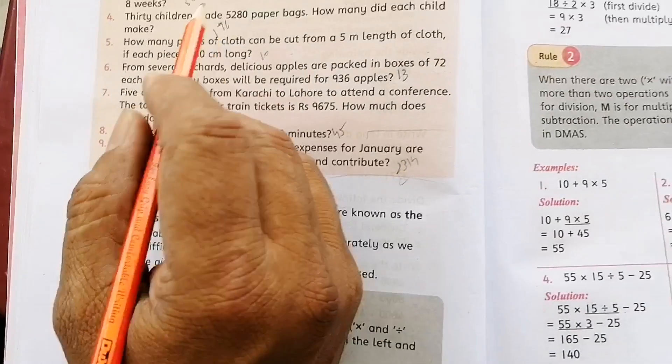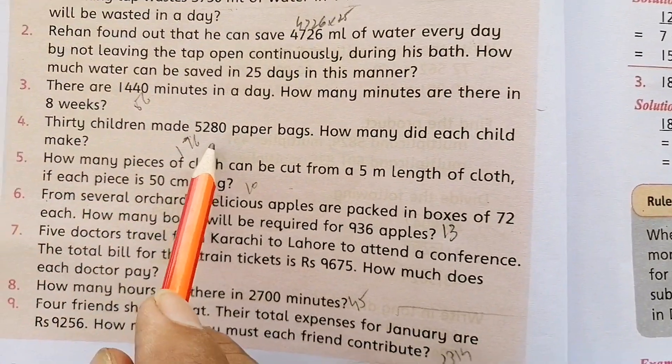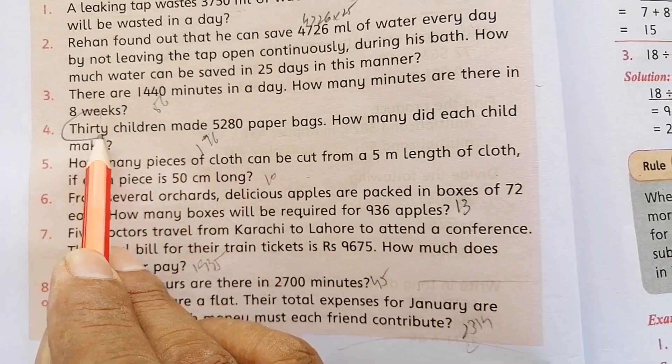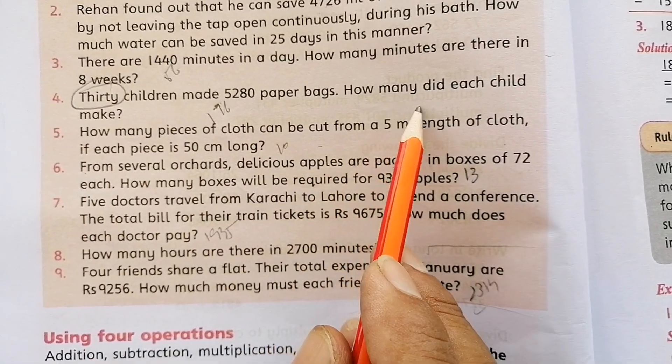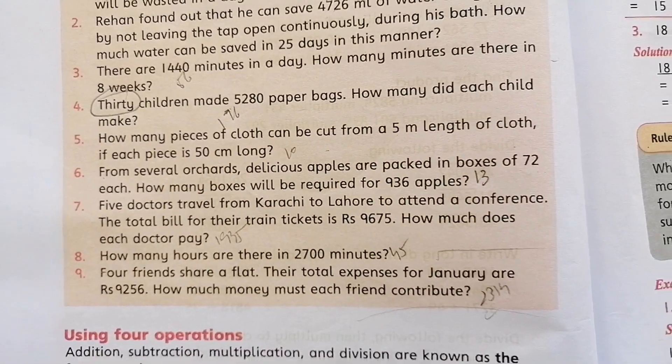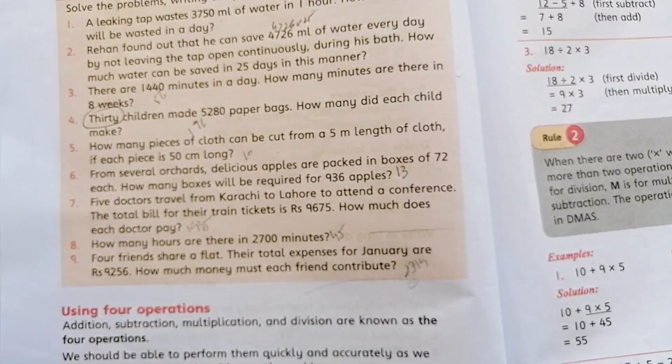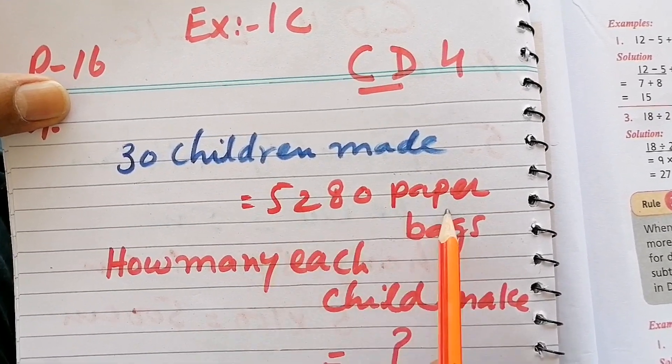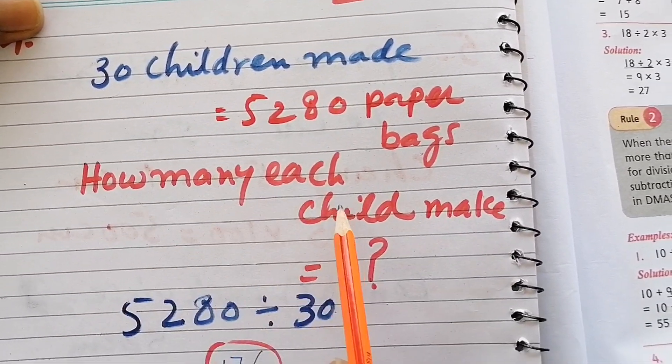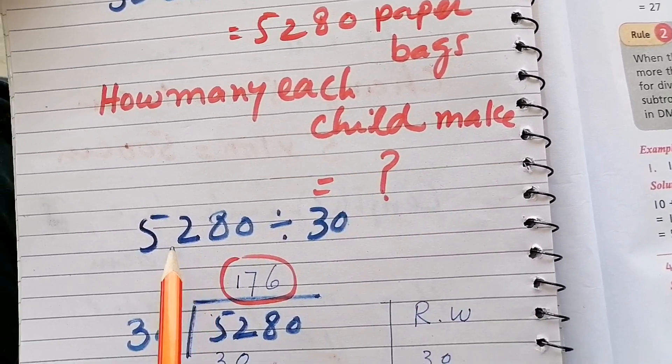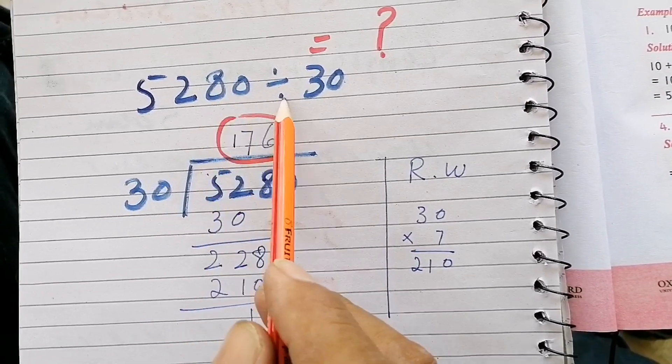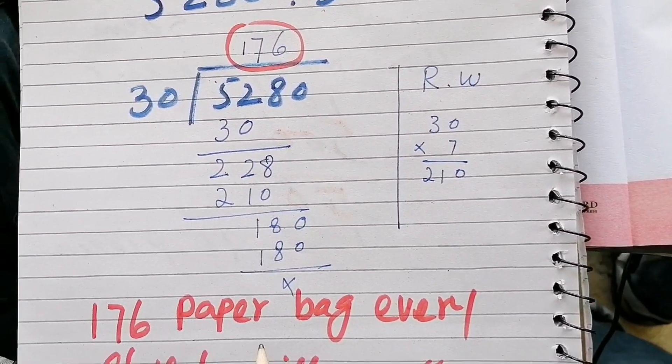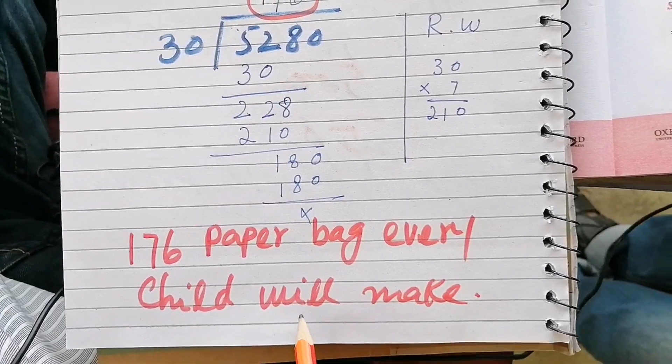Question number four: Thirty children made 5,280 paper bags. How many did each child make? Divide 5,280 by 30 to get 176 paper bags per child.